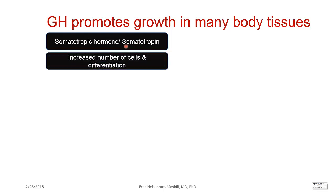The way growth hormone promotes growth is by increasing the number of cells — that is, proliferation of cells — but also by differentiation of those cells to take up a specialized function. So growth hormone affects both the increased number as well as the differentiation of cells.